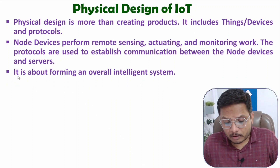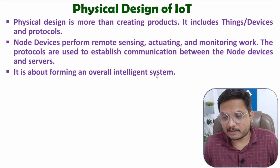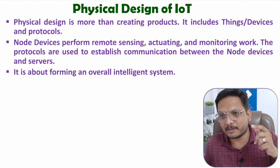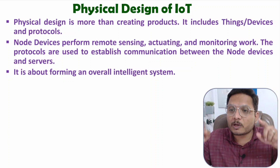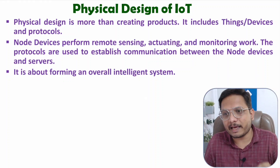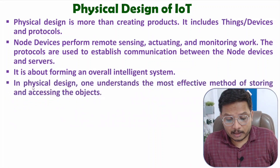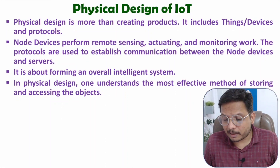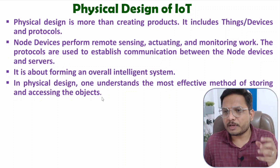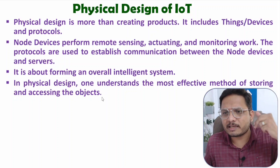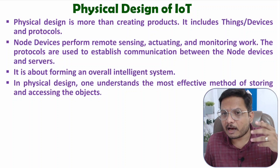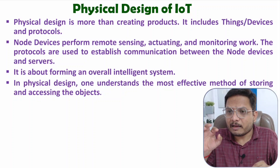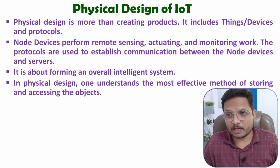Here we are discussing about forming an overall intelligent system. When it comes to an IoT system, it is not only about end devices — you will be discussing about how the overall system is there with a given IoT application. In physical design, one understands the most effective method of storing and accessing objects. You need to understand how exactly storage is happening, how access of data is happening, how access of objects is happening — all the picture that you will be observing to have a final application.